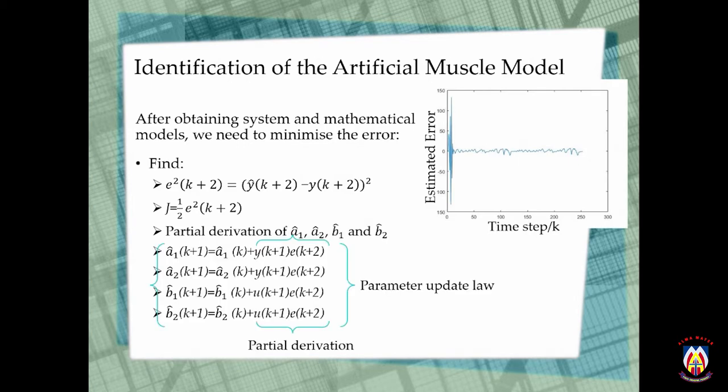After we have calculated J, we can partially derive J in respect to â₁, â₂, b̂₁ and b̂₂. And then by using the parameter update law, we can calculate â₁(k+1), which is basically the step after k. And the second term in the parameter update law is basically the partial differentiation we calculated in the previous step.